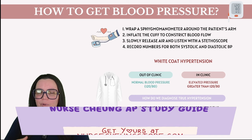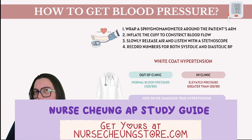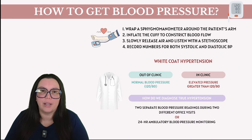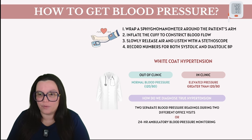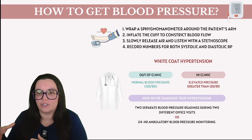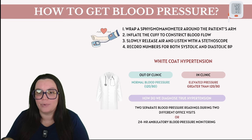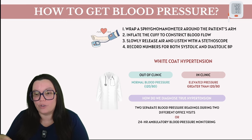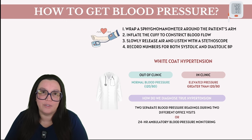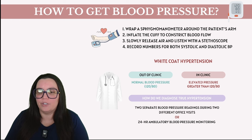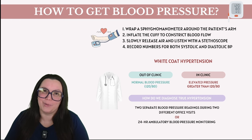But what if somebody's blood pressure is always high when they're in the office? How do we differentiate between true hypertension and white coat hypertension? There is something called ambulatory blood pressure monitoring. This test involves a 24-hour blood pressure monitoring system at the patient's house, providing an average of blood pressure readings throughout the entire day, including separate averages for morning and night. These readings give us a clear picture of the individual's true blood pressure status, helping us distinguish between actual hypertension and white coat hypertension.